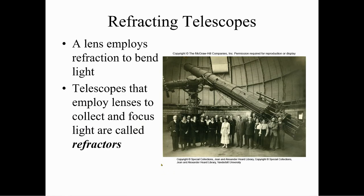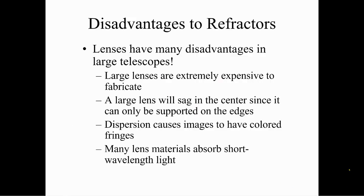Refracting telescopes use refraction to focus light. A lens employs refraction to bend light. Telescopes that employ lenses to collect and focus light are called refracting telescopes, or refractors. Disadvantages to refractors — and this is one of your homework questions: large lenses are extremely expensive to fabricate, a large lens will sag in the center since it can only be supported on the edges, dispersion causes images to have colored fringes, and many lens materials absorb short-wavelength light.